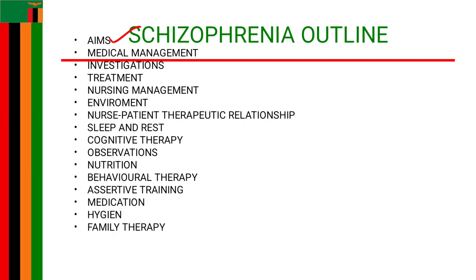After the M's, the bigger heading is medical management. Under medical management, you need to do two things: investigations, then you move on to treatment. On investigations, you are supposed to come up with at least five investigations.